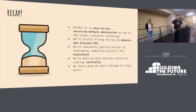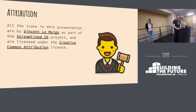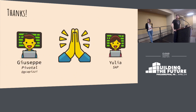So to recap: we've seen how Garden is effectively an easy-to-use and secure-by-default abstraction on top of well-established standard container technology. We've seen how we're fixing the way we measure and allocate CPU for containers. We've seen how our glue is getting thinner through ContainerD, and how we're getting more secure by running rootlessly. And finally, how we're sharing what we're learning through our blog. Giuseppe and I are going to be hanging around if anybody has any questions. Thank you.